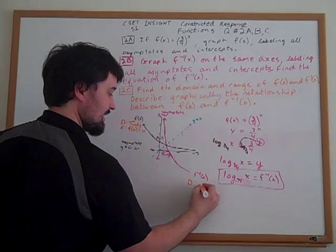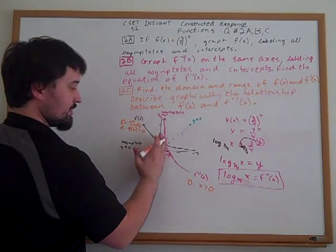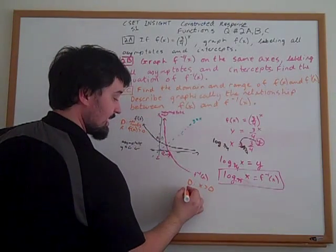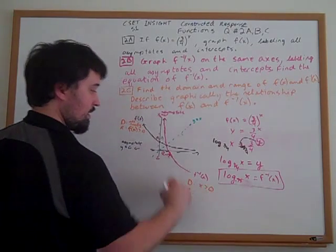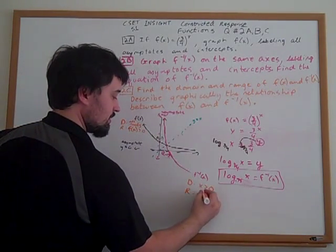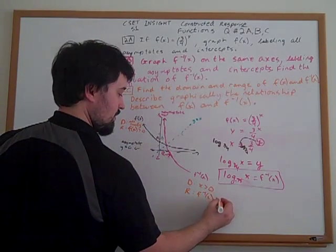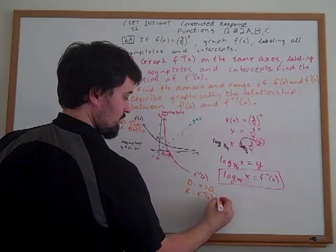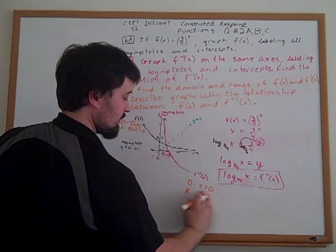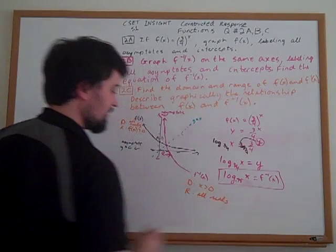So now the domain is that x has to be greater than zero because it doesn't cut past this axis, this asymptote. And the range is that the y, the f of x, f inverse value, can be anything. Let's just write all reals and make life simple.